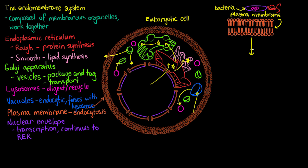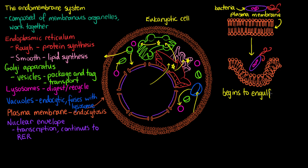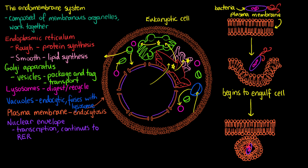What's going to happen here is our plasma membrane is going to begin to engulf that bacteria. So it begins to engulf the bacterial cell. And once it fully engulfs the bacteria, we've formed something called the phagosome or the phagocytic vacuole.